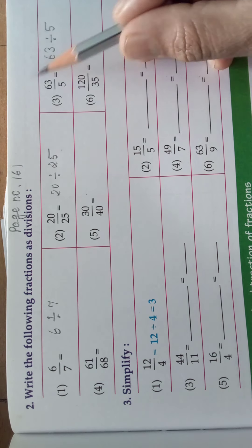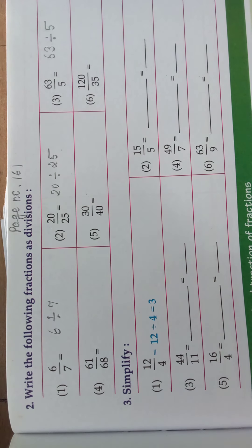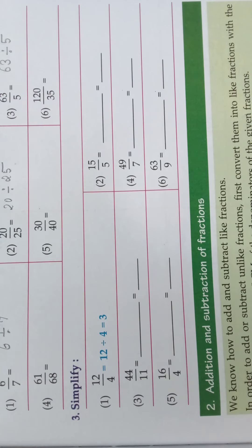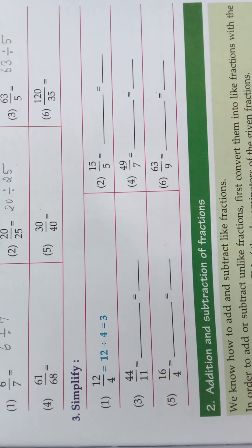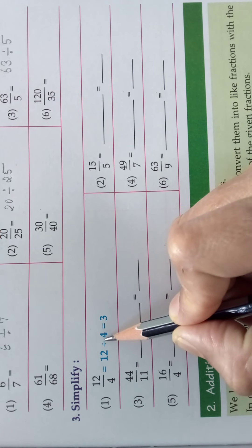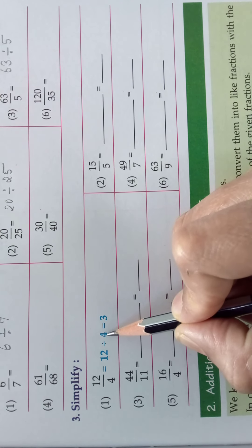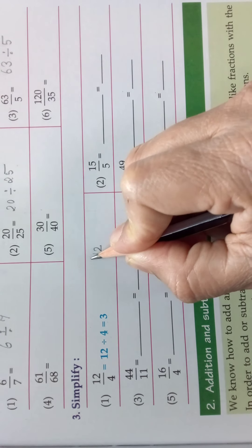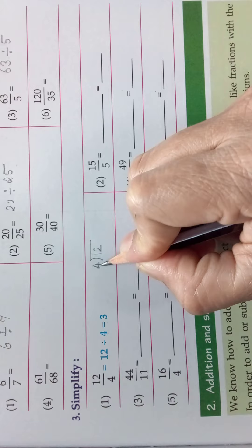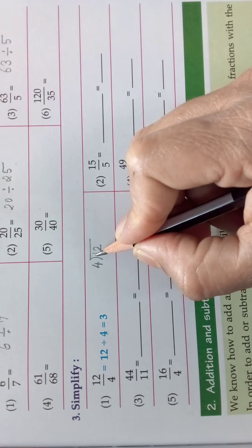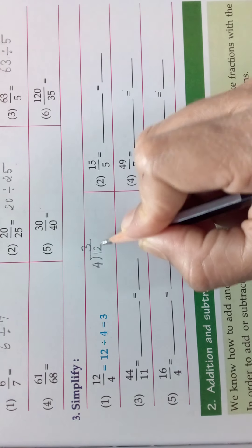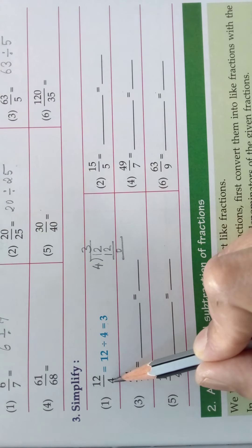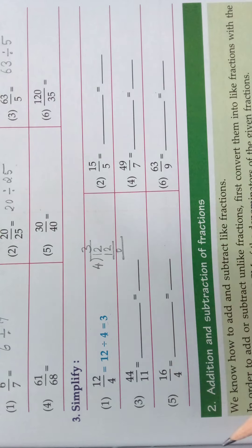Now we will do the third sum: Simplify. Look here — 12 by 4. We can write it as 12 divided by 4. So how much is 12 divided by 4? In the 4 times table: 4 ones are 4, 4 twos are 8, 4 threes are 12. So 12 by 4 is nothing but 3.